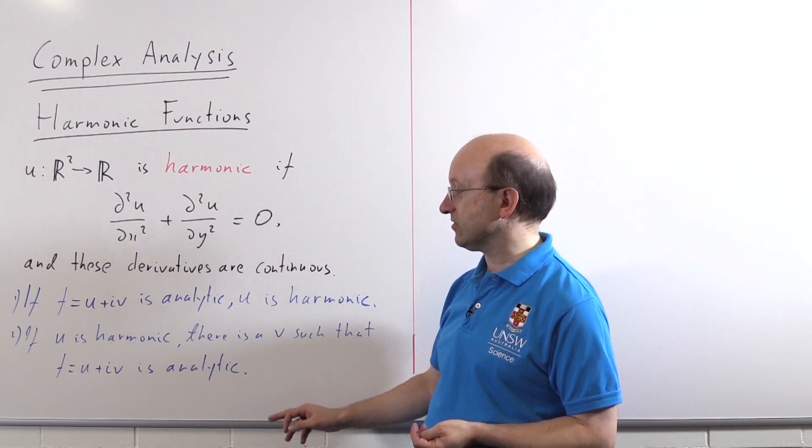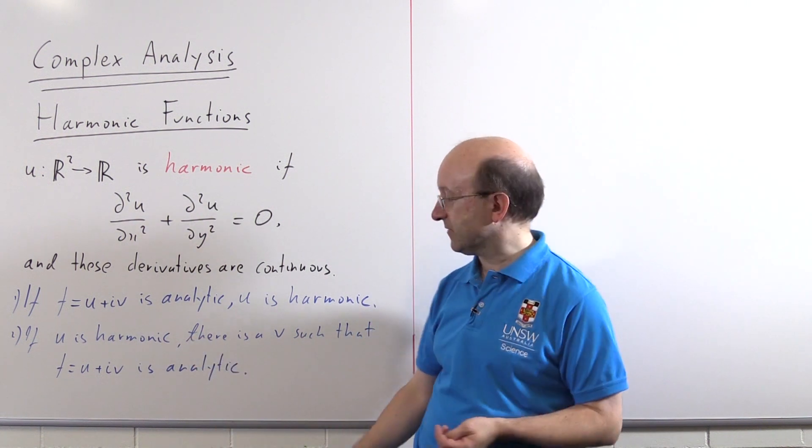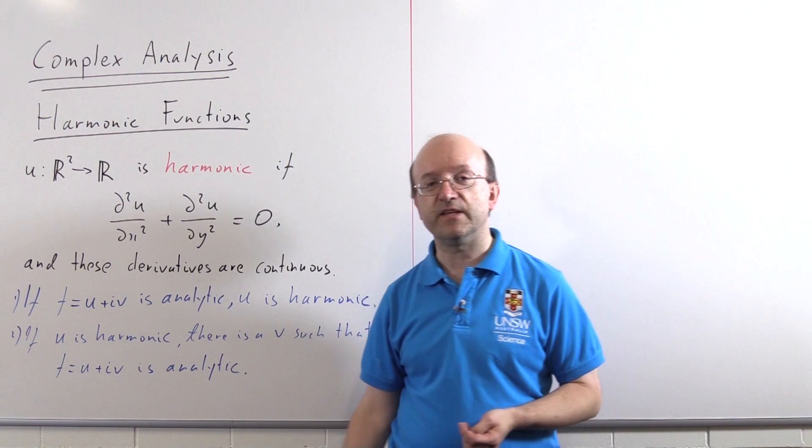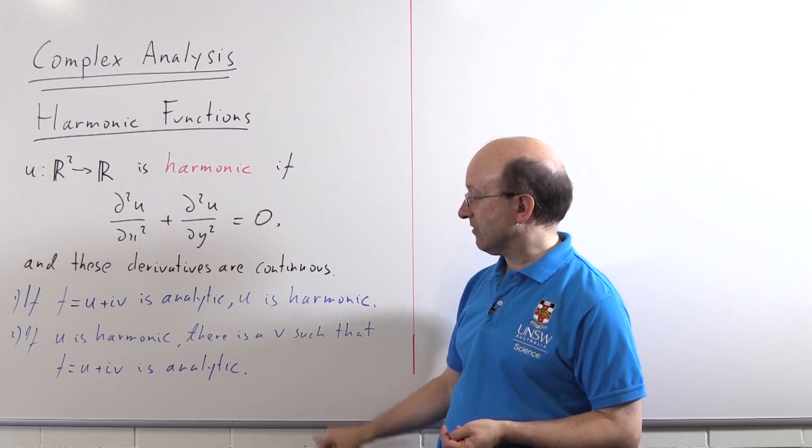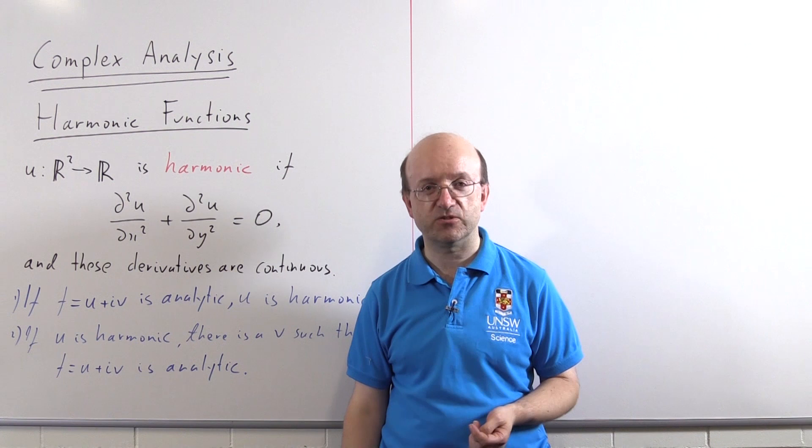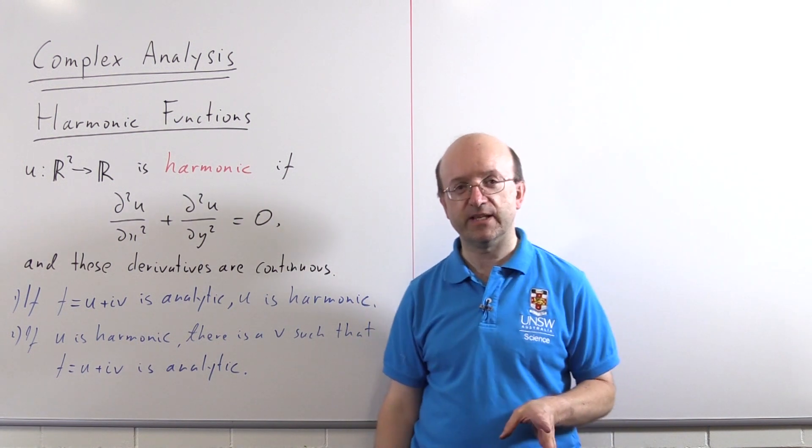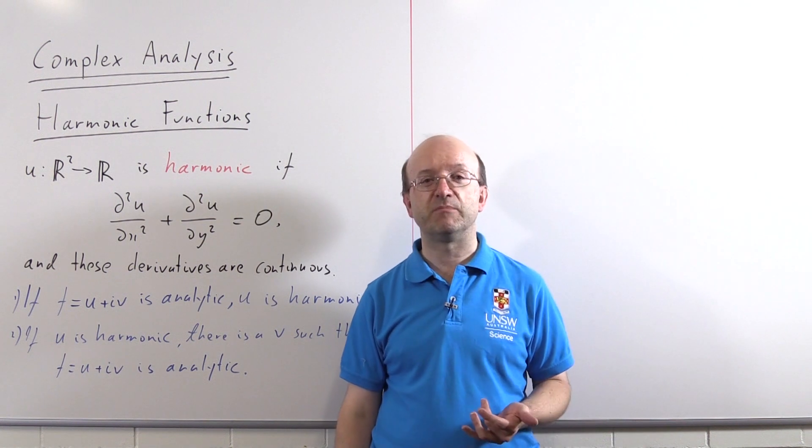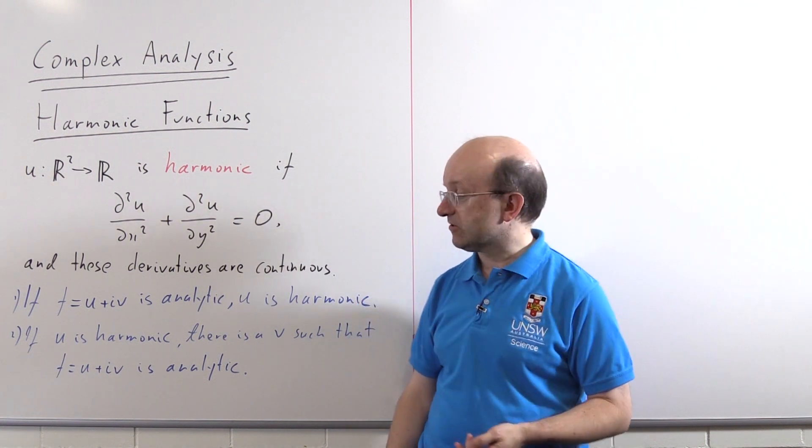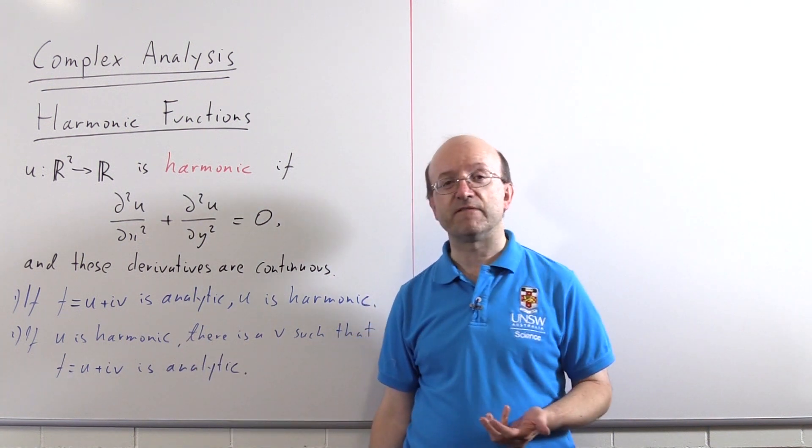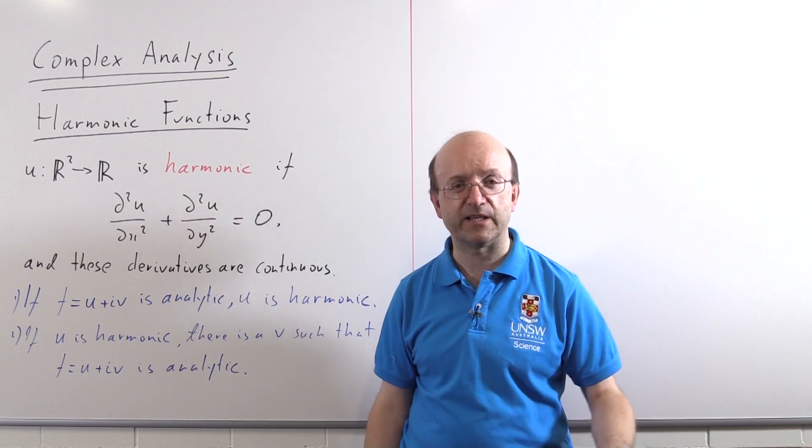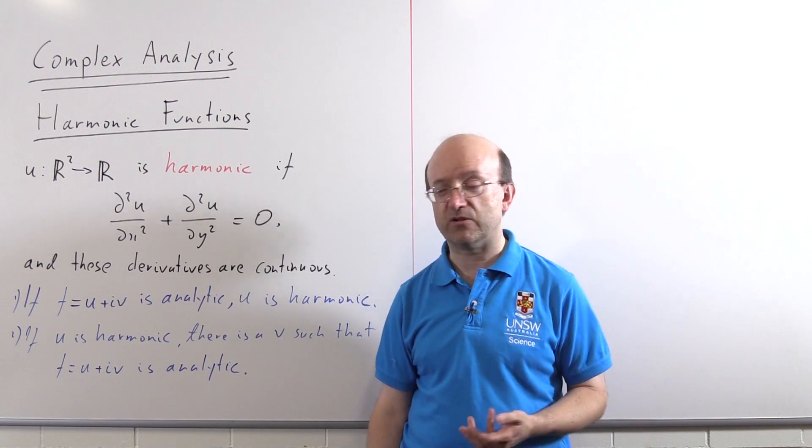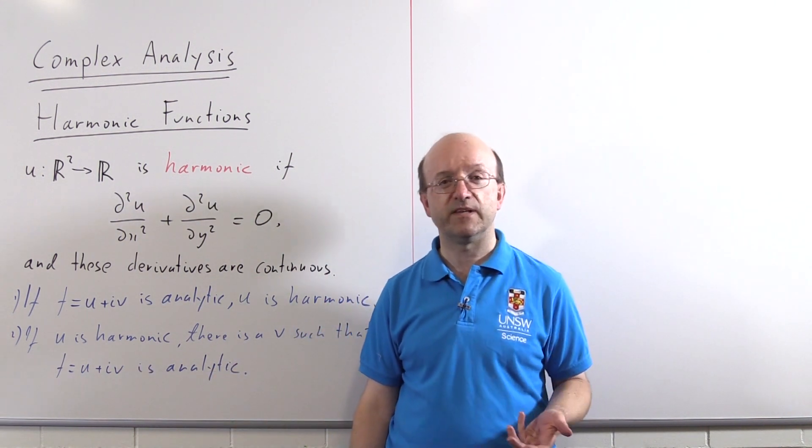The second result goes in the other direction. If u is harmonic, then there is a v such that u + iv is an analytic function. We call this function v a harmonic conjugate of u. It's not unique, but any other harmonic conjugate only differs from v by a constant. So if you're given a harmonic function u, you can find a whole family of analytic functions f, but they all differ by just an imaginary constant.